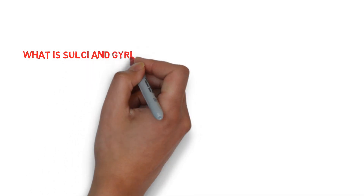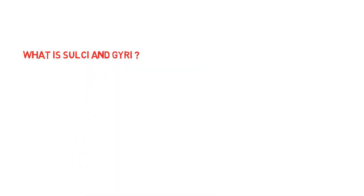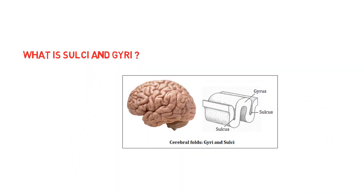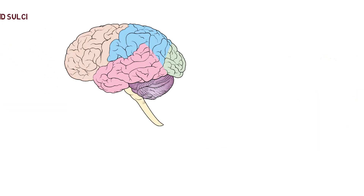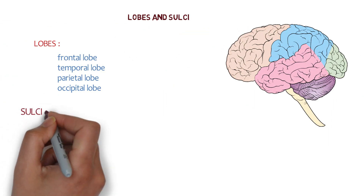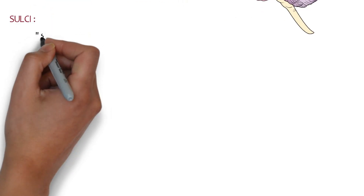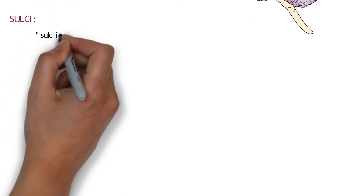The foldings of the cerebral cortex create gyri and sulci. Gyri are the folds or bumps, while sulci are the indentations or grooves in these folds. Sulci separate brain regions and increase the brain's surface area and cognitive ability.